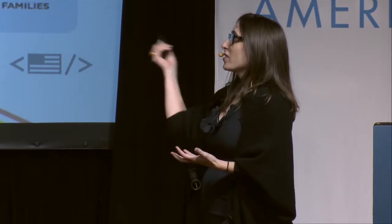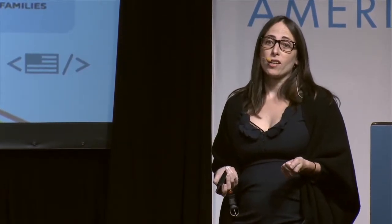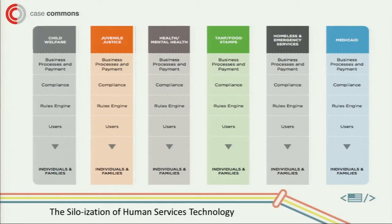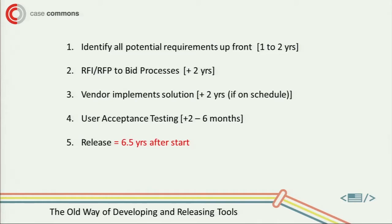Why does this happen? Today, there's a ton of siloization across human services technology — child welfare, juvenile justice, mental health, food stamps, homelessness, Medicaid. These systems have been set up based on organizational structures, procurement, and laws that designed these silos of data, and they're incredibly expensive to create and maintain. At the center of these systems are individuals and families, and at the heart is case management. What we care about is making better outcomes for kids and families.